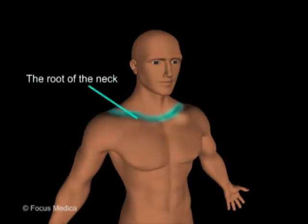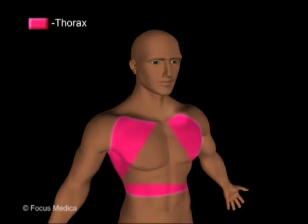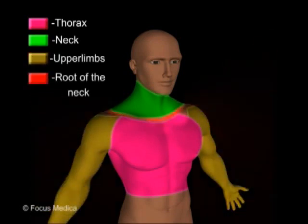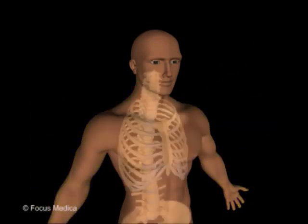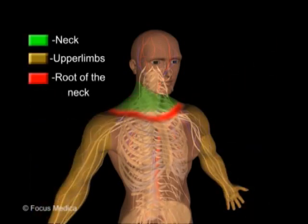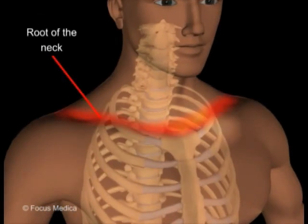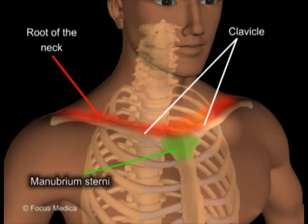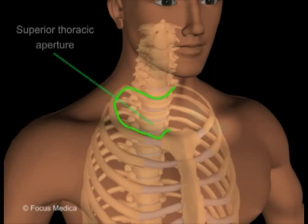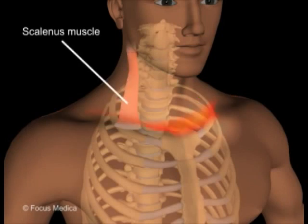The root of the neck is the area around the superior thoracic aperture, where the thorax, neck, and upper limb converge. Vessels and nerves pass through this zone as they reach the upper limb, neck, or the thorax. It is an area bound by the clavicle, manubrium sterni, and the C7 vertebra. The superior thoracic aperture is located in the depths of this region. The scalenus anterior is the key muscle of this region.